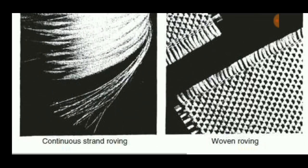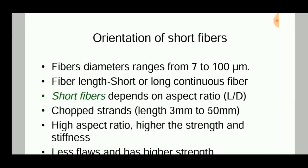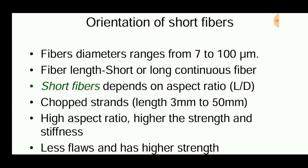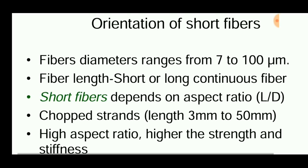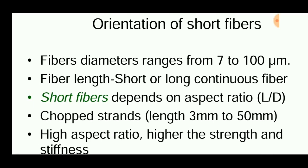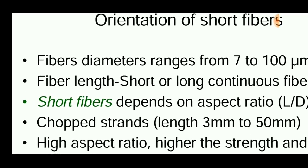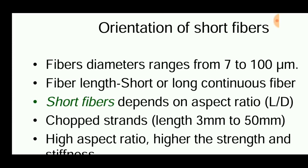These are cut pieces of the continuous long fiber. For short fibers, the fiber diameter ranges from 7 to 100 micrometers. The diameter plays a vital role — if the diameter is very small, the aspect ratio is good and strength and toughness will also be good. If the diameter is of more size than the length, properties such as strength and toughness will not be good.